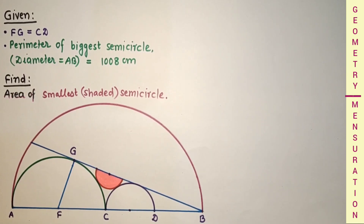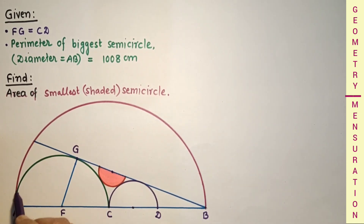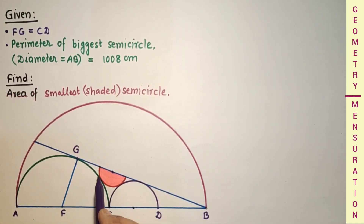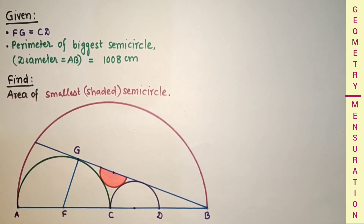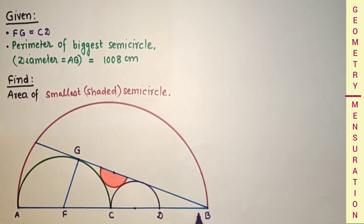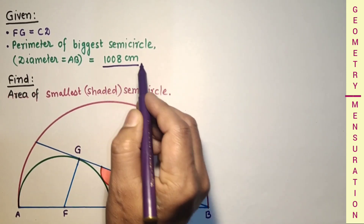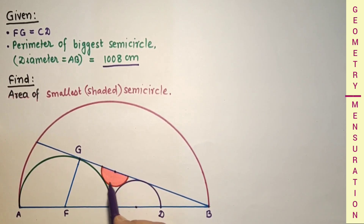Hi everyone, welcome to this channel. In this question, we are given that this is a semicircle. These two semicircles are touching each other. This semicircle is touching these two semicircles as shown in the diagram. Length of FG is equal to length of CD. CD is the diameter for this semicircle, FG is the radius of this semicircle, and AB is the diameter of the biggest semicircle whose perimeter is given as 1008 cm. We have to find the area of the pink shaded semicircle.